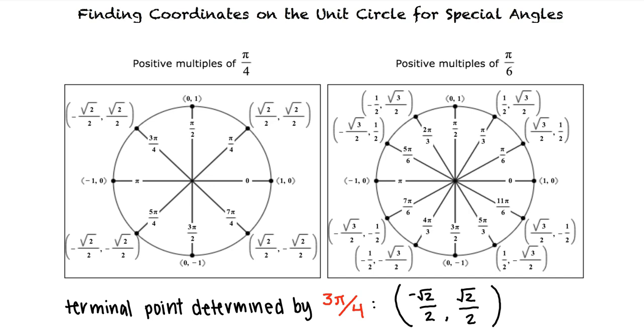What if we were asked to find the terminal point on the unit circle determined by negative pi radians? We would go counterclockwise pi radians, which looks like we end up on the same point as if we had gone clockwise pi radians. This terminal point is negative 1, 0.